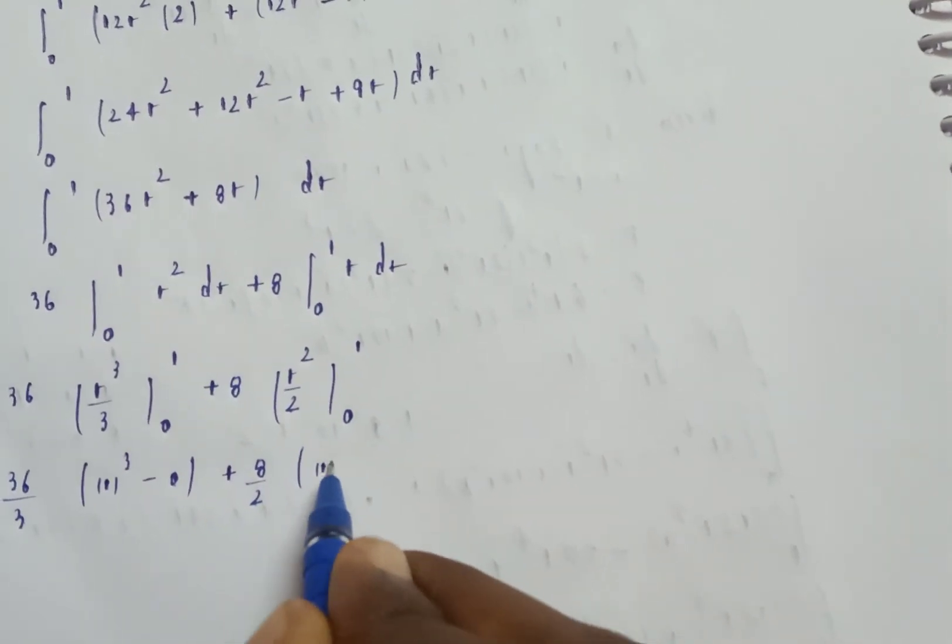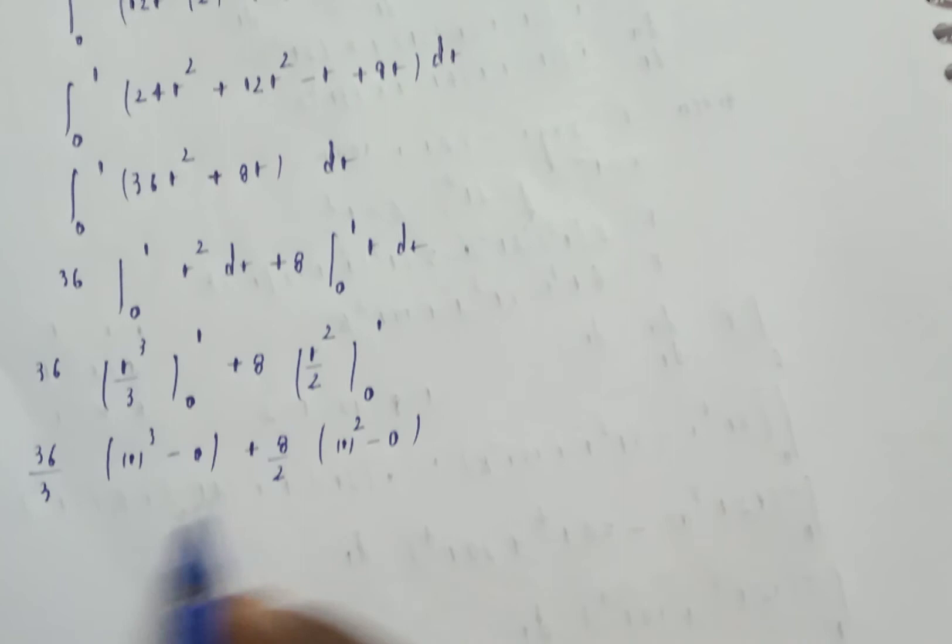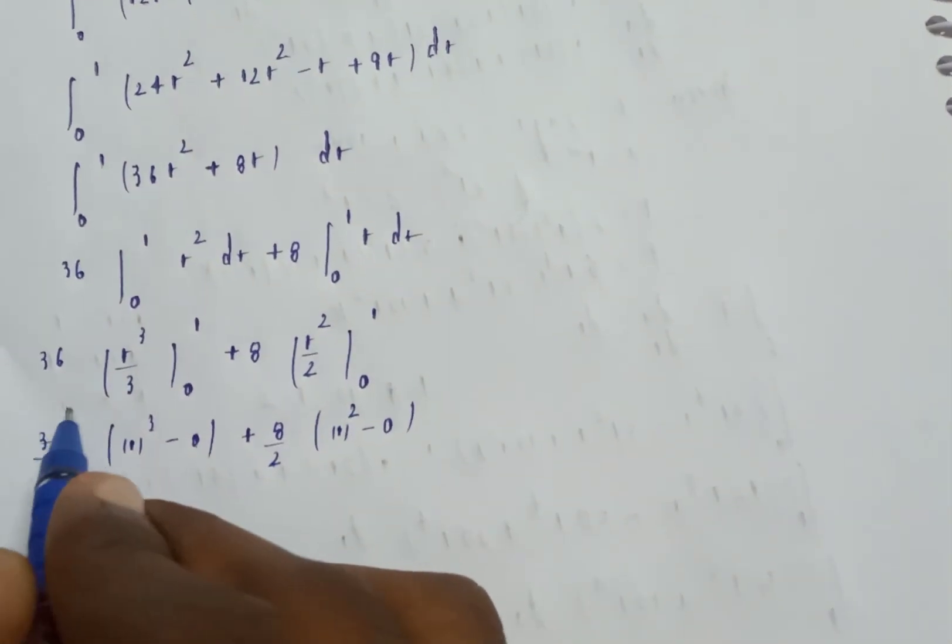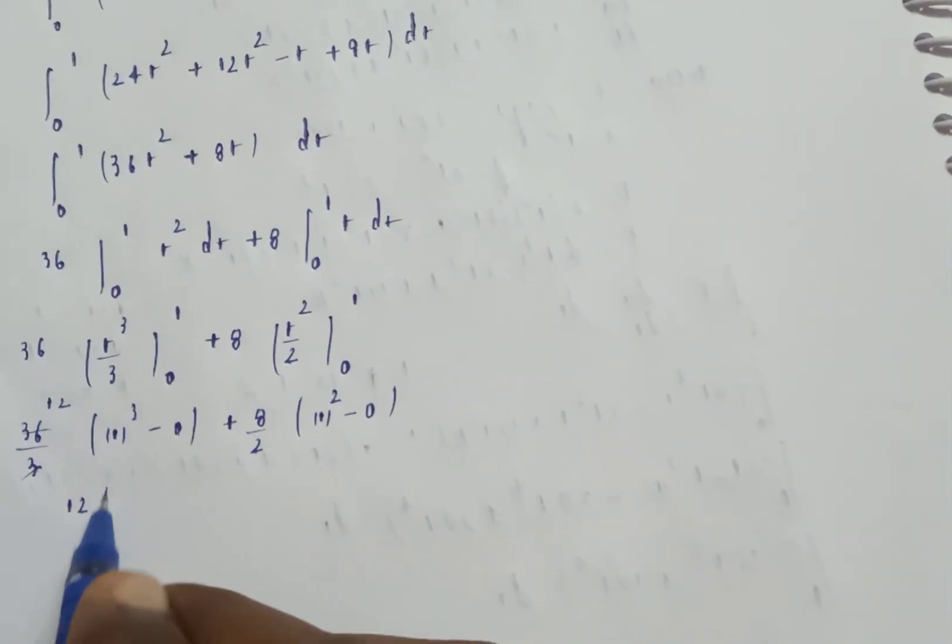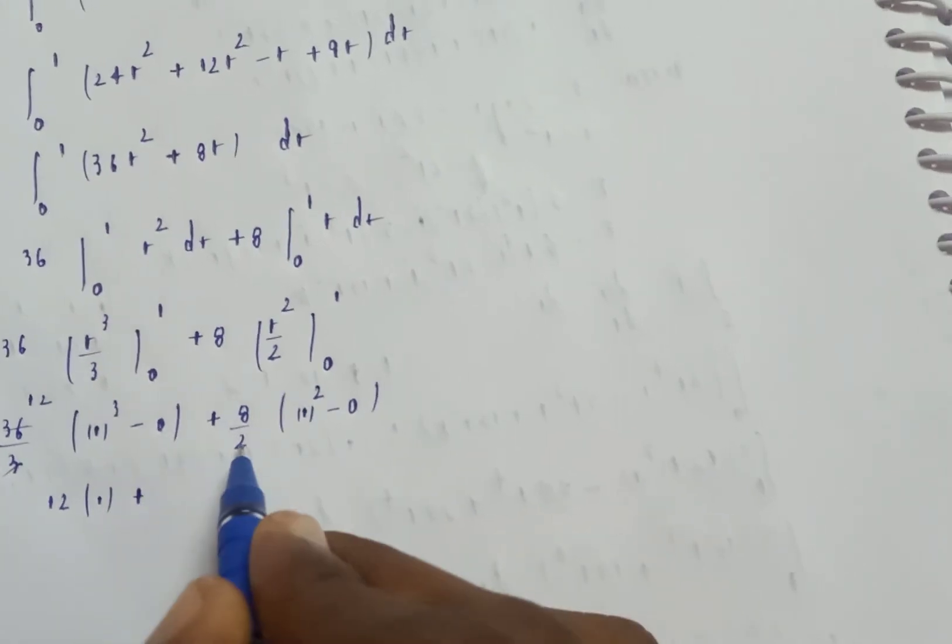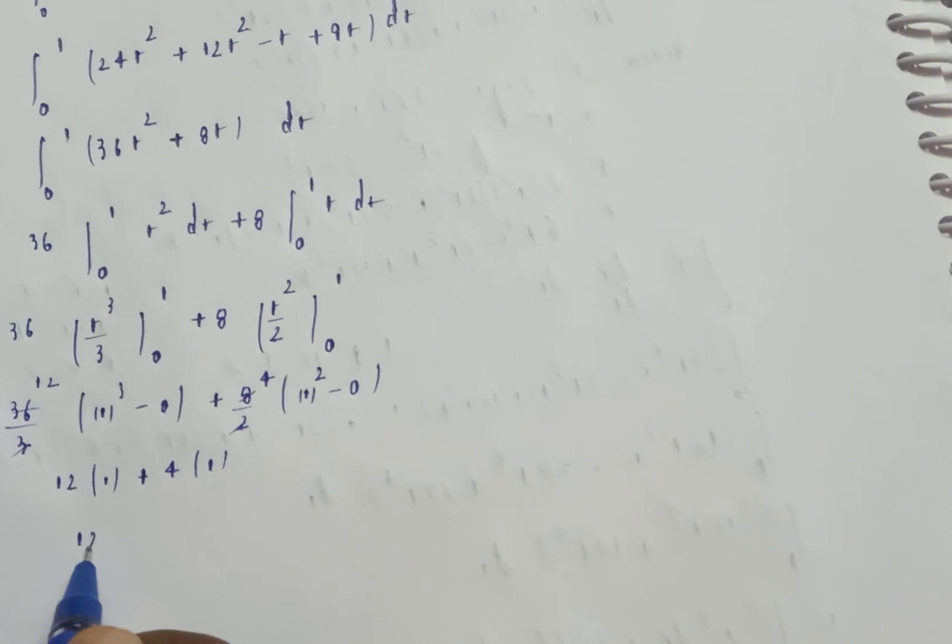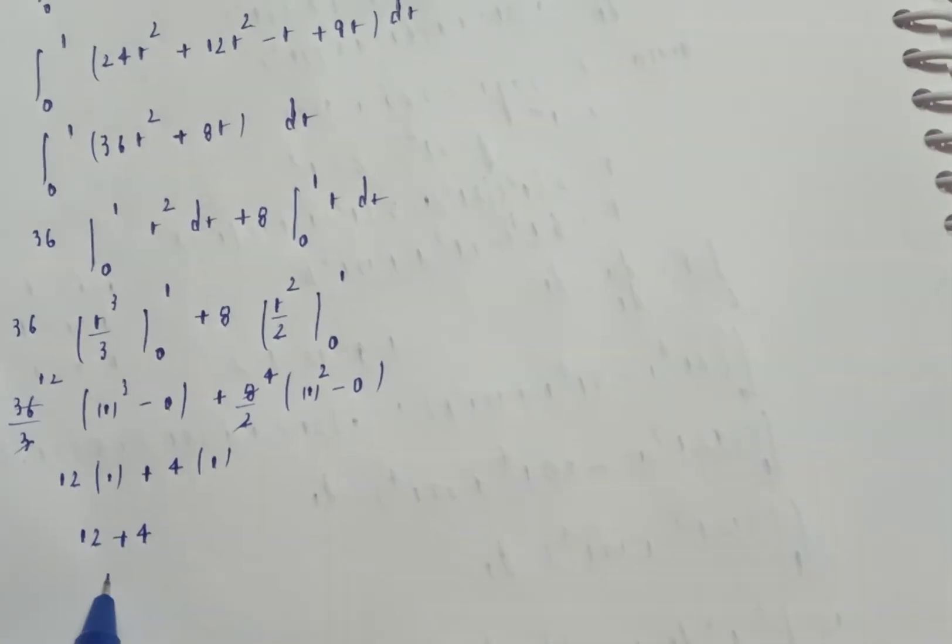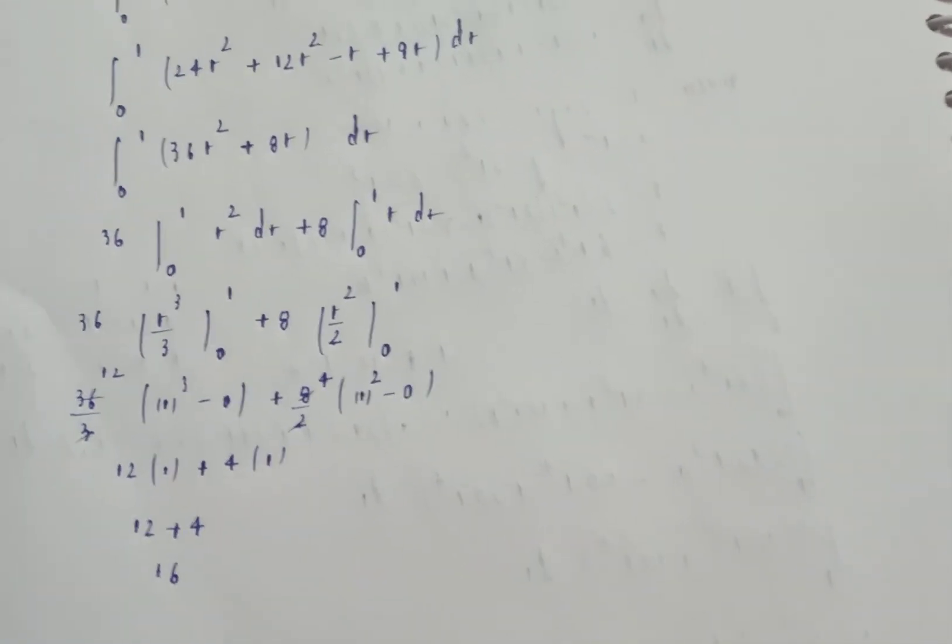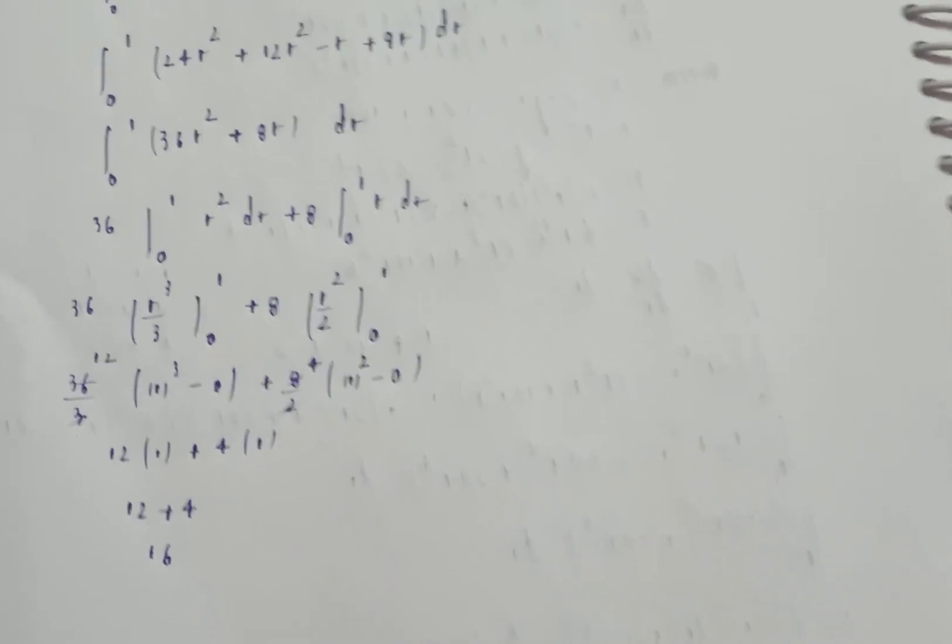Equals 12 of 1 plus 4 of 1, which is 12 plus 4 equals 16. This is the final answer. Please subscribe to the channel.